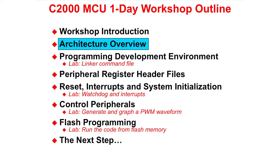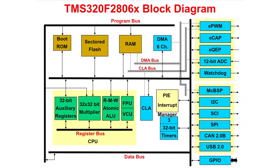Now we will discuss the architectural overview. This block diagram represents an overview of all device features and is not specific to any one device. The F28069 device is designed around a multi-bus architecture, also known as a modified Harvard architecture. This can be seen in the block diagram by the separate program bus and data bus, along with the link between the two buses. This type of architecture greatly enhances the performance of the device.